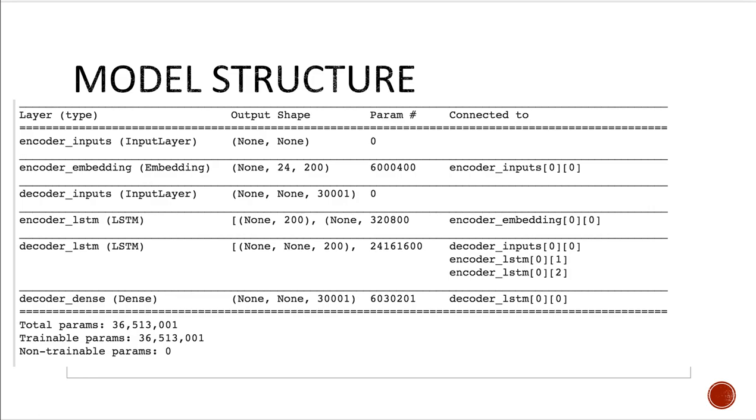And for the decoder layer, there is an LSTM layer and a dense layer, which is a kind of fully connected layer to predict the probability of the output.